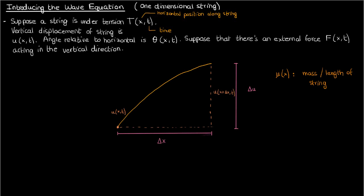Let's now label the remainder of the variables on the string. The tension is going to act tangent to the direction of the string, and it's going to pull the string apart. So we'll label the tension at the left end T of x and t, and the angle relative to the horizontal as theta of x and t at that point.